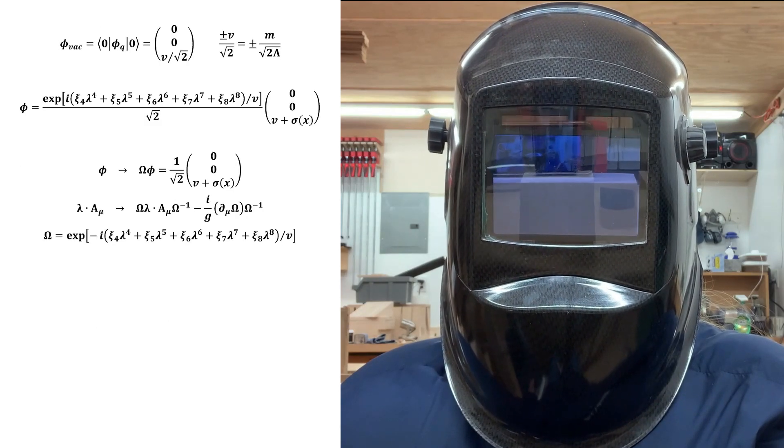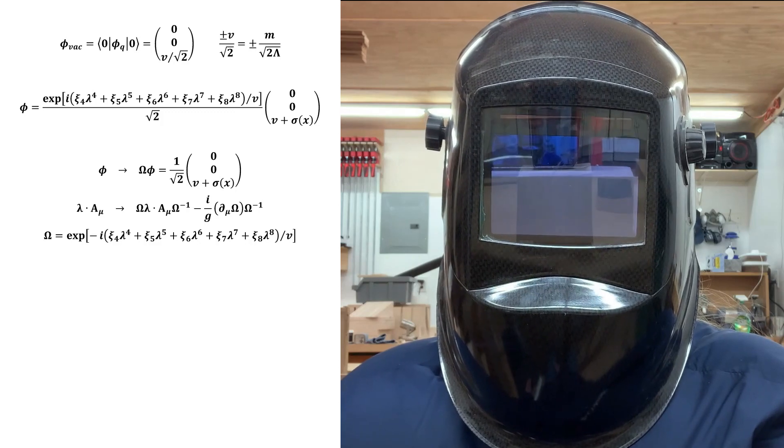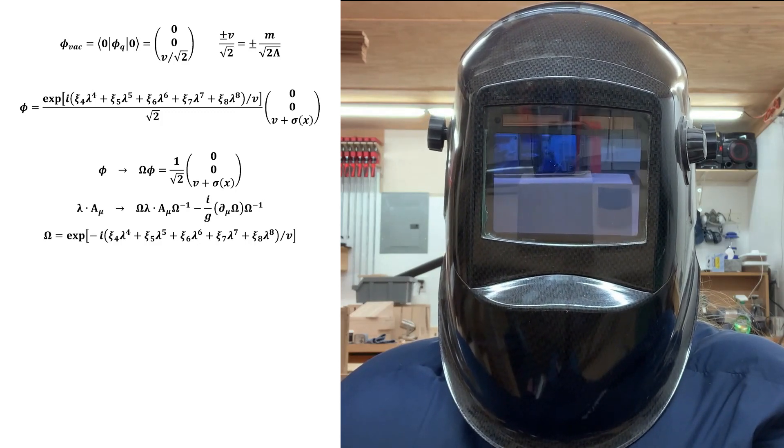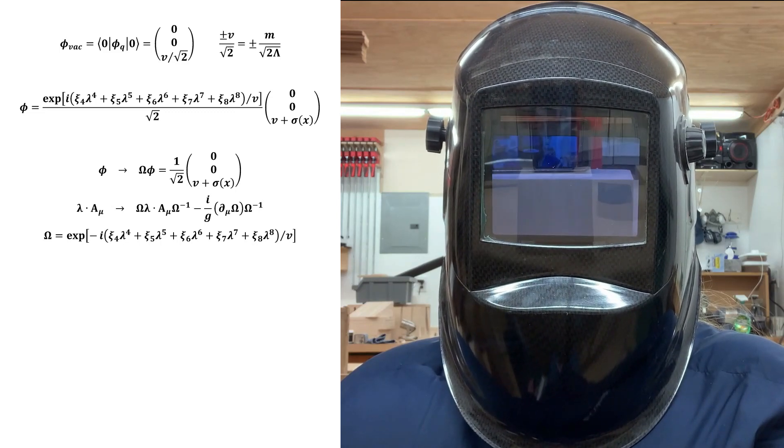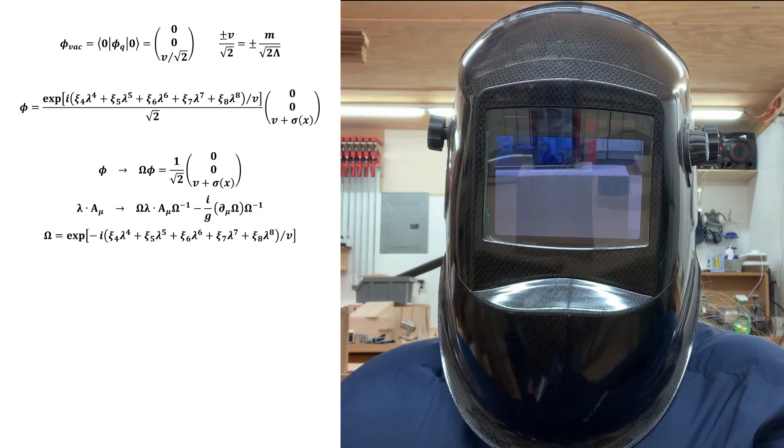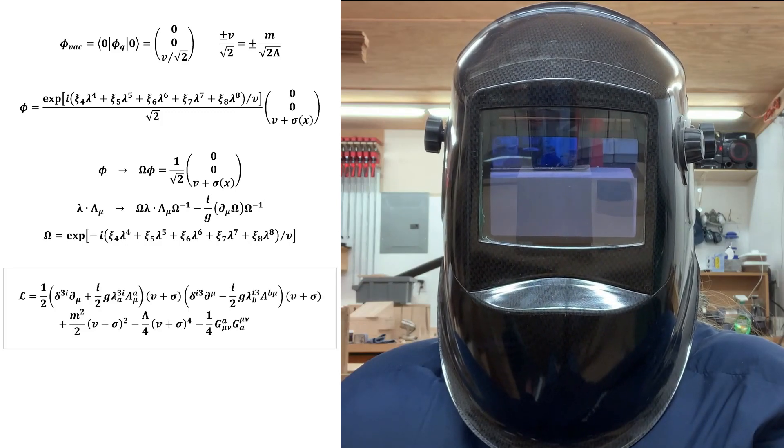Because the original Lagrangian is gauge invariant, we can obtain the spontaneously broken Lagrangian density in the unitary gauge simply by inserting the gauge-transformed scalar field reparameterization into the Lagrangian density that we started with. This leaves us with this.